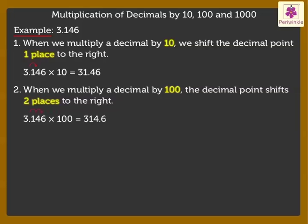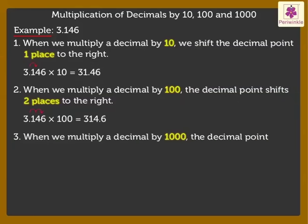Similarly, when we multiply a decimal by thousand, the decimal point shifts three places to the right. Thus, 3.146 into 1000 is equal to 3146.